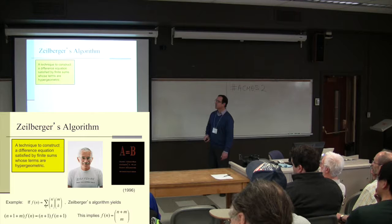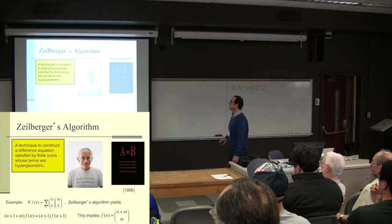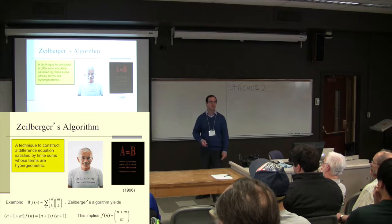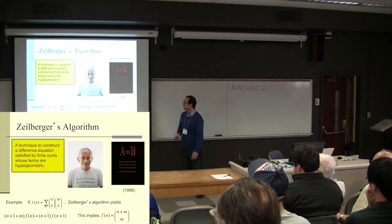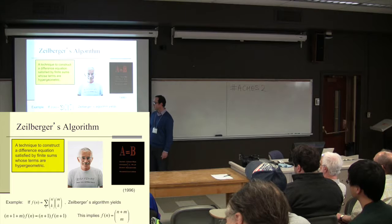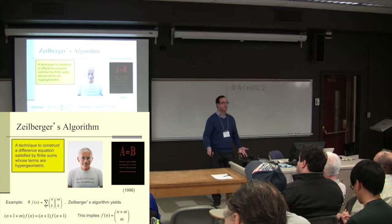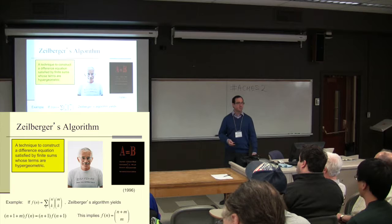Zeilberger's algorithm is really magical stuff — he came up with techniques to study difference equations. The book he wrote is titled 'A = B', one of the most curious titles around. If I define the sum f(n) as a sum over all appropriate k's, Zeilberger's algorithm produces a recurrence relation, and from there it's a simple step to get a closed form formula. We go through various combinatorial sums using these algorithms built into Maple.